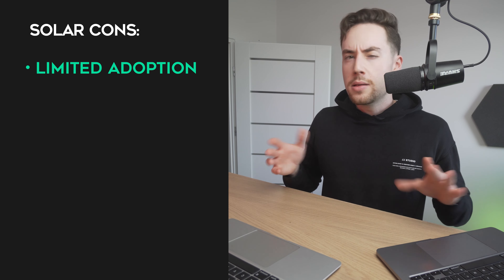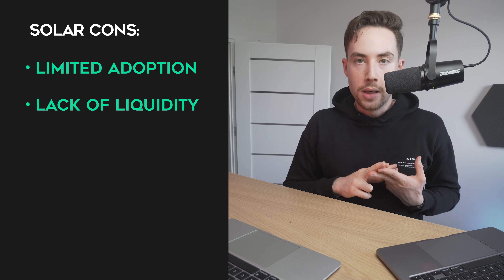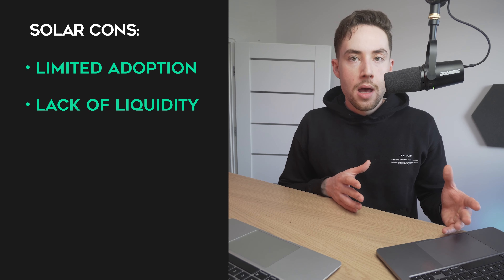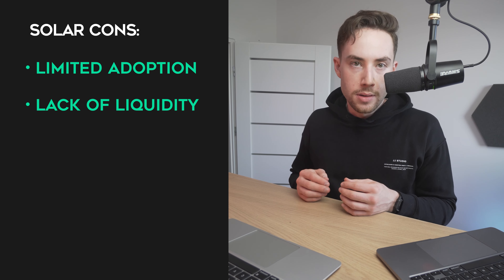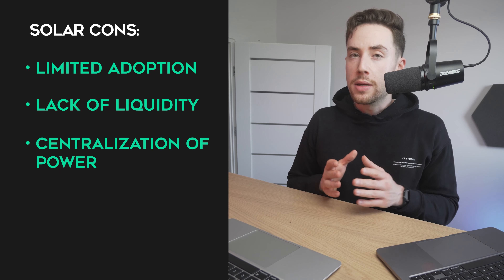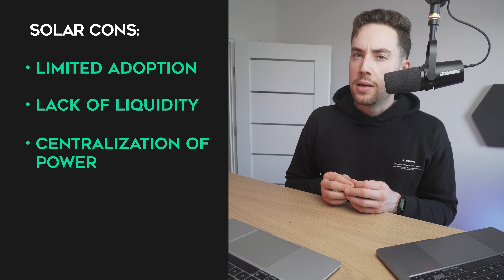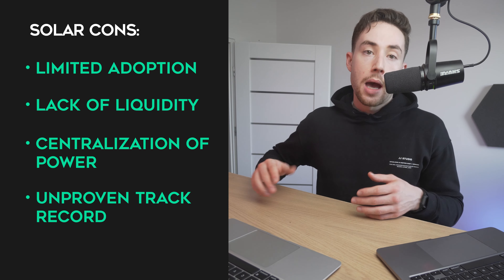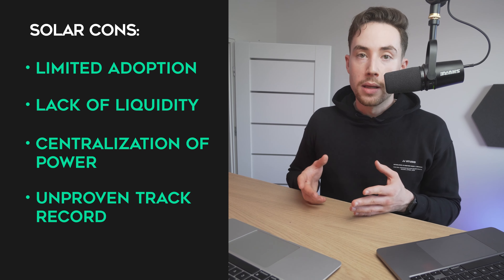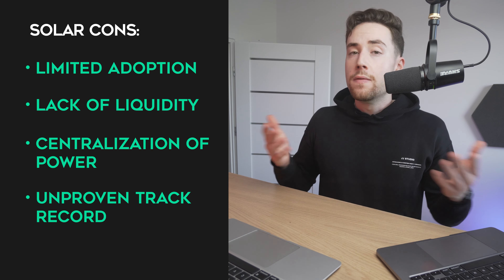The cons of Solar include: limited adoption — Solar has a relatively low level of adoption compared to more established blockchains like Ethereum, making it challenging for developers to attract users. There's also a lack of liquidity — as a relatively new network, Solar currently has limited liquidity, making it difficult to trade SXP and attract investment. Then there's centralization of power — only 53 delegates maintain and secure the network, which could be considered a centralization of power. Finally, there's an unproven track record — as a newer blockchain, Solar has not yet established a proven track record in terms of security, scalability, and overall performance, which may make users hesitant to invest in SXP.